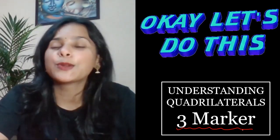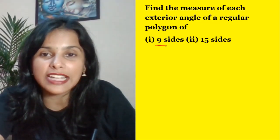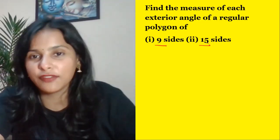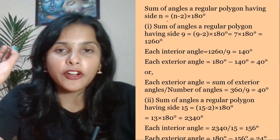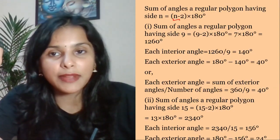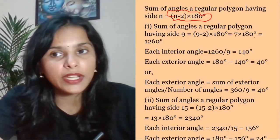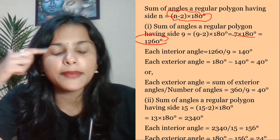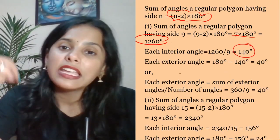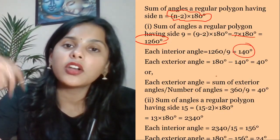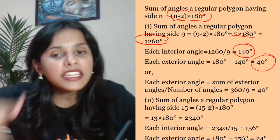Question 1: Find the measure of each exterior angle of a regular polygon with 9 sides and 15 sides. For a regular polygon, sum of interior angles = (n−2) × 180. For 9 sides: (9−2) × 180 = 7 × 180 = 1260. Each interior angle = 1260 ÷ 9 = 140 degrees. Each exterior angle = 180 − 140 = 40 degrees.